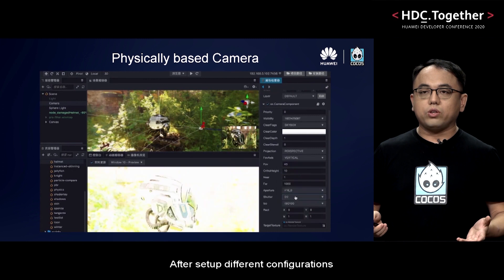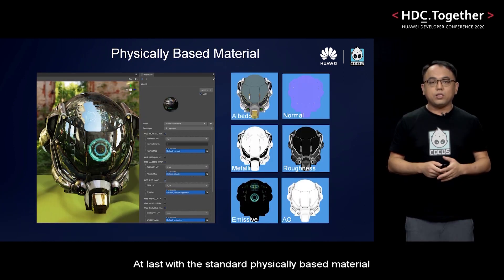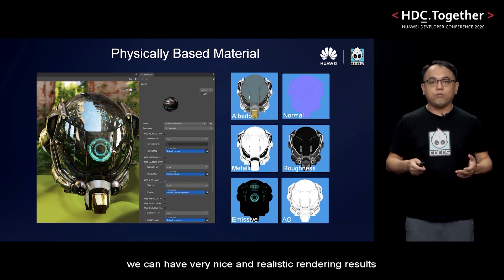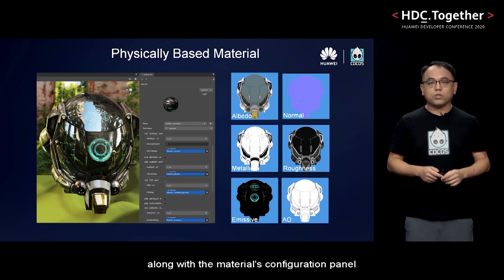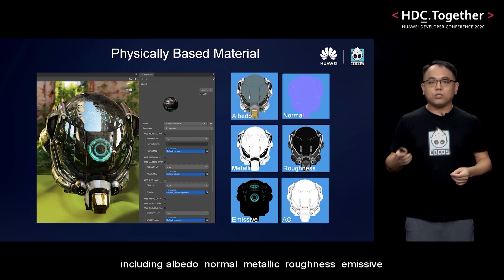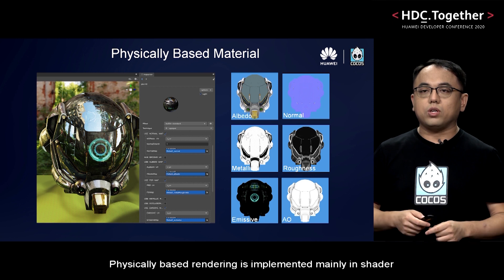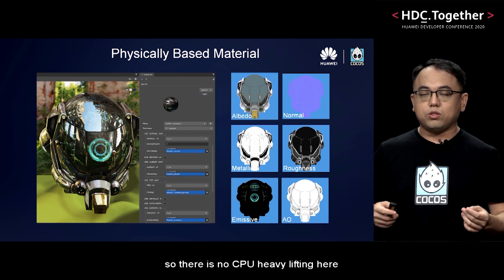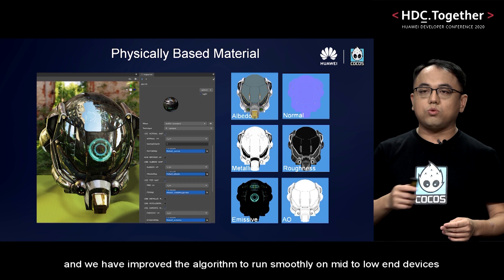After setting up different configurations, you can see the result instantly in the editor's camera preview. With the standard physically-based material, we can achieve very nice and realistic rendering results. At the left, you can see a helmet rendered with a full PBR material, along with the materials configuration panel. The right-side images are input textures used to render this helmet, including albedo, normal, metallic, roughness, emissive, AO, and IBL environment map from the skybox. Physically-based rendering is implemented mainly in shaders, so there is no CPU heavy lifting, and we have improved the algorithm to run smoothly on mid to low-end devices.